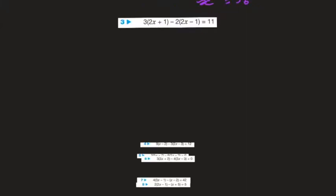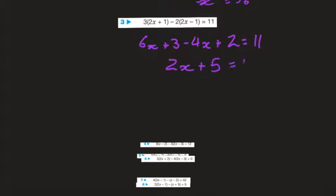3 times 2x is 6x, 3 times 1 is 3, minus 2 times 2x is minus 4x, minus 2 times minus 1 is positive 2, and that equals 11. Gathering like terms: 6x minus 4x is 2x — not so lucky this time — and 3 plus 2 is 5, equal to 11.